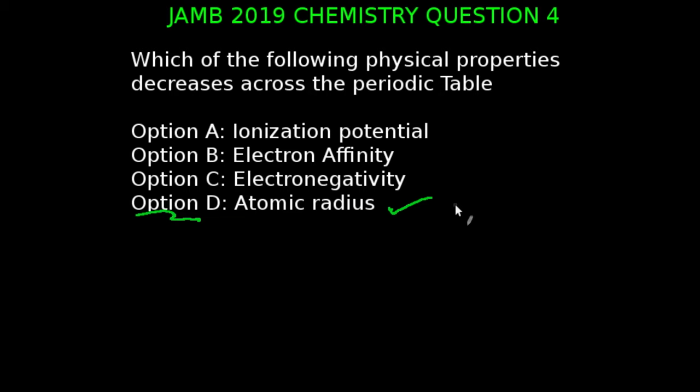You're looking at question four of the JAMB 2019 chemistry examination. Which of the following physical properties decreases across the periodic table? Moving left to right across a period, the nucleus has a greater pull on the outer electrons, and the atomic radii decreases. So the correct answer to this question is option D, which is atomic radii.